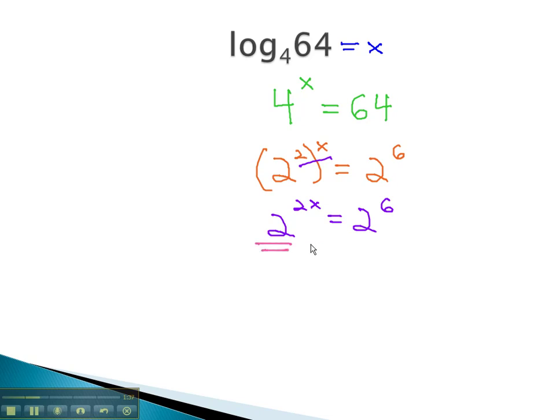We now have the same base on both sides of the equation, which means we can say the exponents must also be equal. 2x equals 6. Finally, to find x, or the logarithm, we'll divide both sides by 2 to get x equals 3.